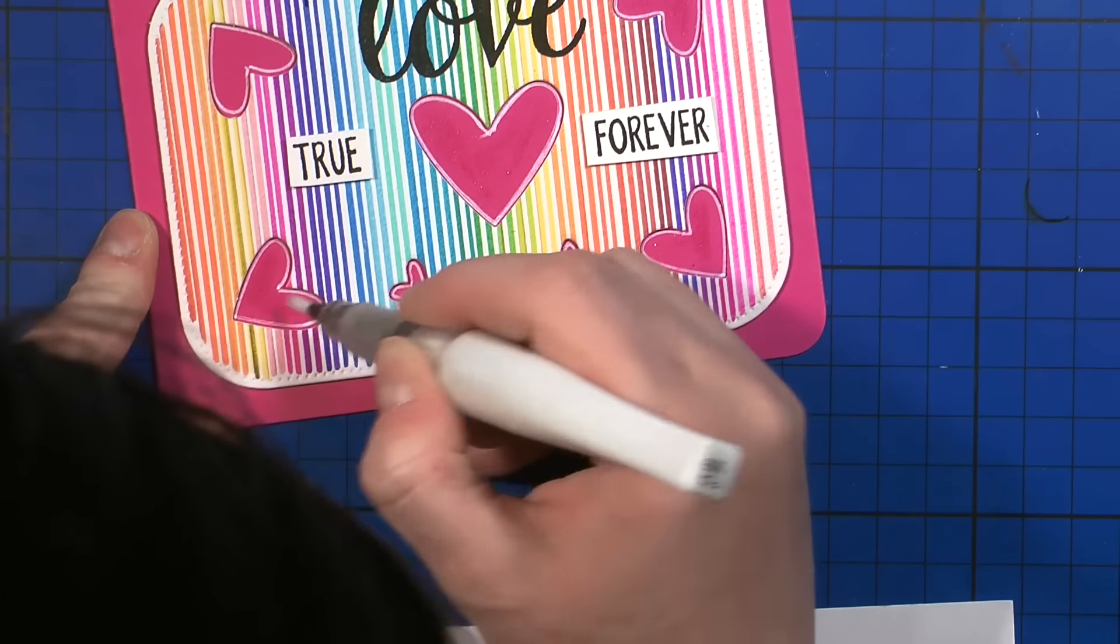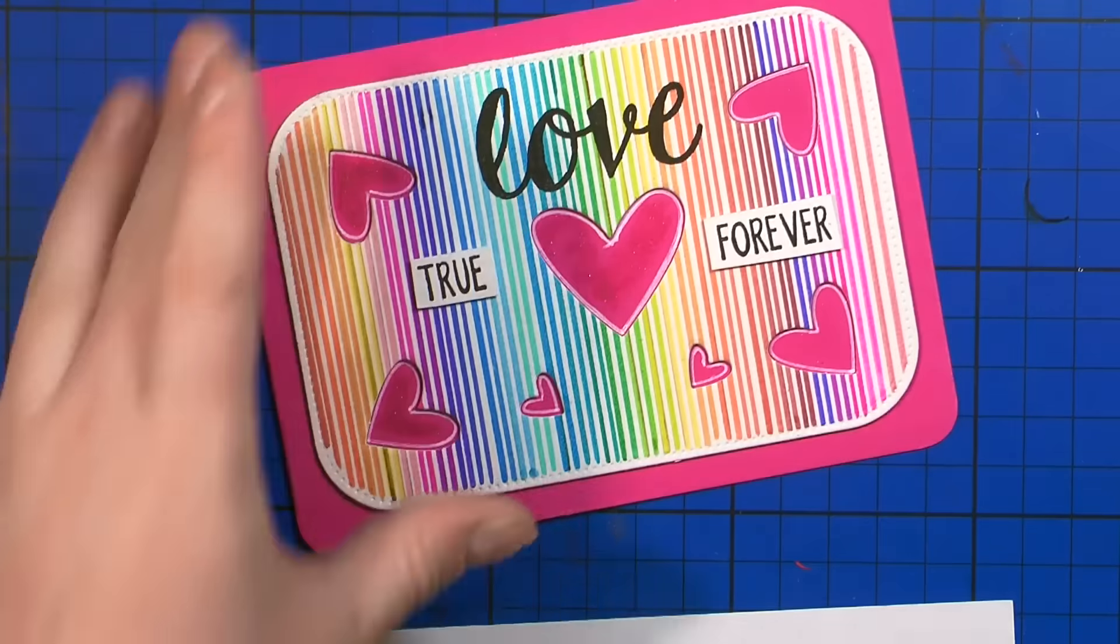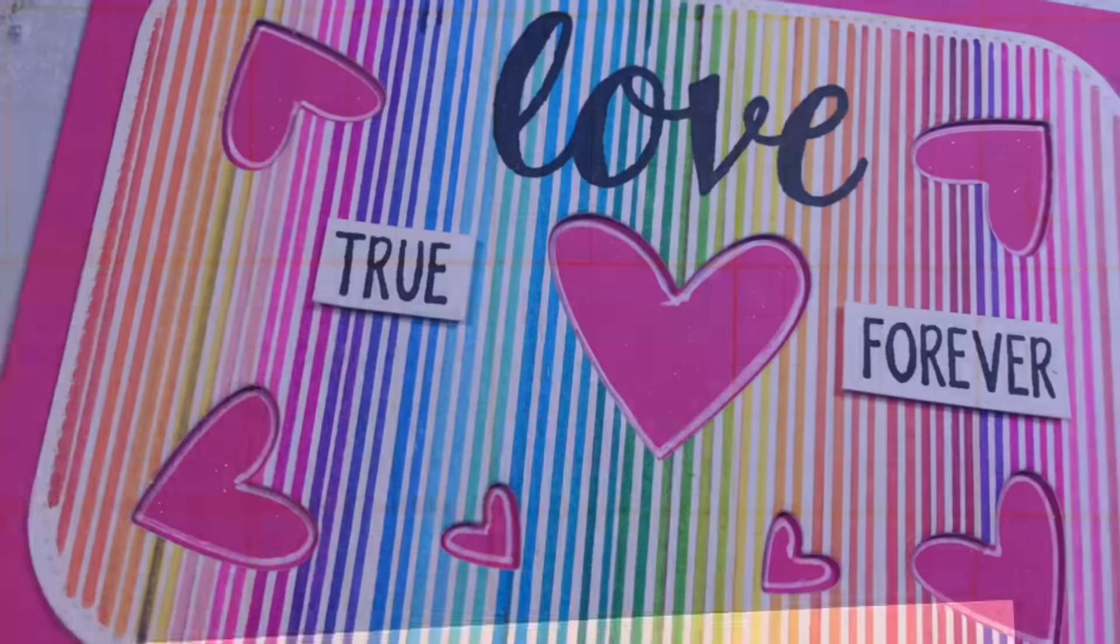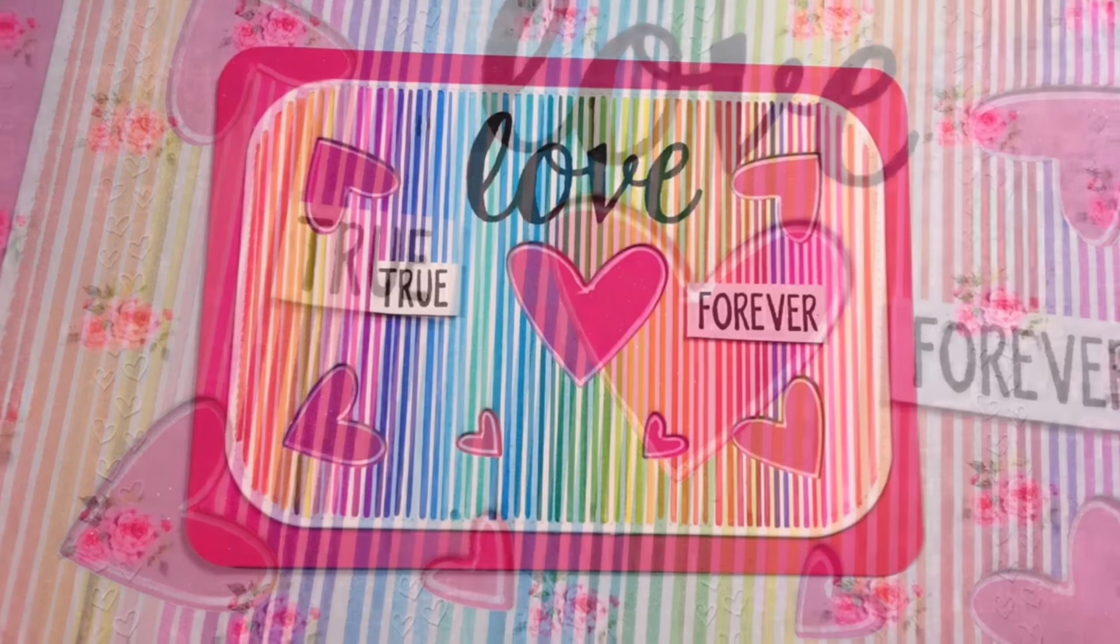I might do it in the future whenever I will have time. And as you can see, I'm also adding some clear Wink of Stella glitter pen on the hearts. For now, it looks a little splotchy. It will dry out and become sparkly, as you can see here on the close-up picture.